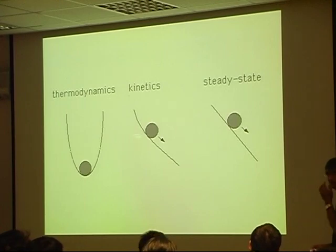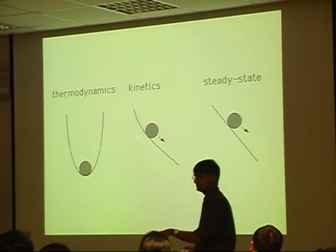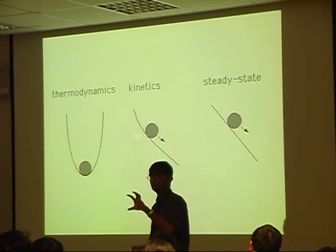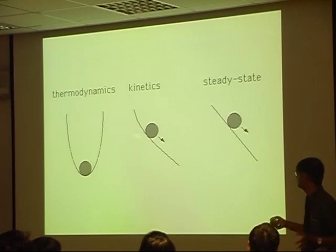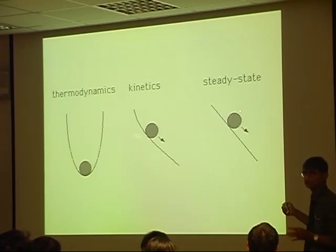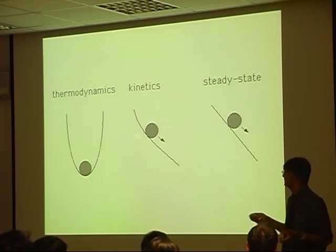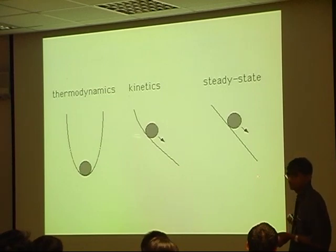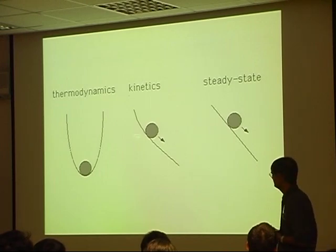But there is another state where, although we are dissipating energy, if you locate yourself on this pole, you will see no change, because here the gradient is constant. And that's what we call a steady state process. Although change is happening, because the gradient here is constant, it is as if change is not happening.